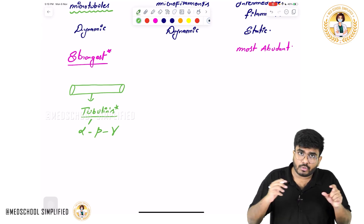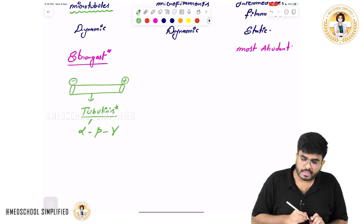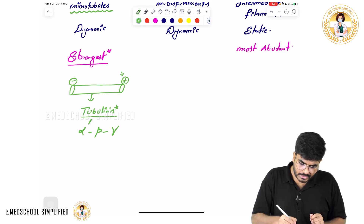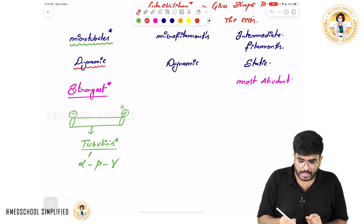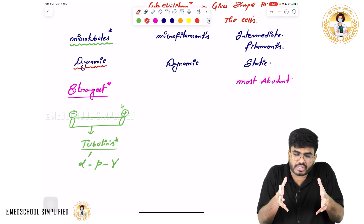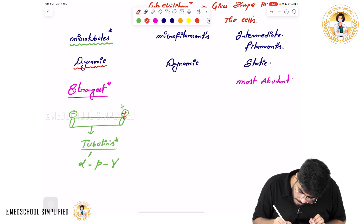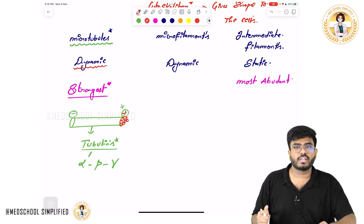Microtubules have two terminals — one positive terminal and one negative terminal. Since microtubules are dynamic filaments, they are kept on growing. The end which keeps growing by the addition of tubulin molecules is called the positive terminal.